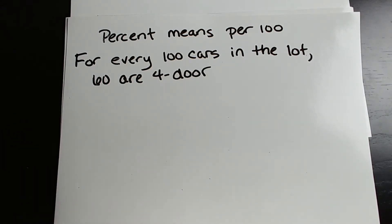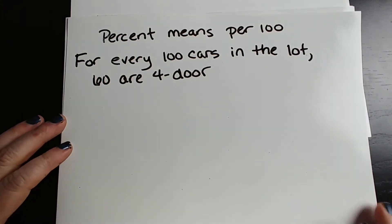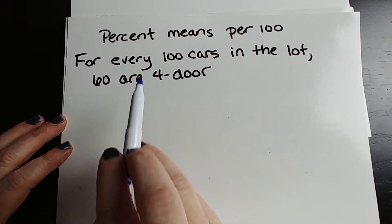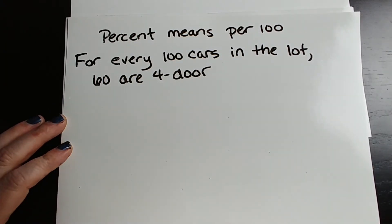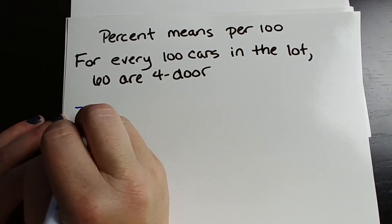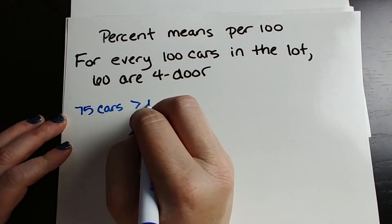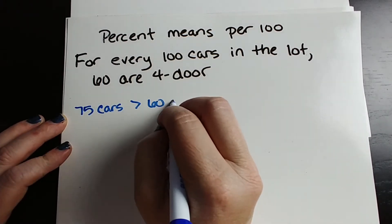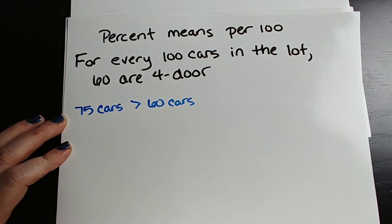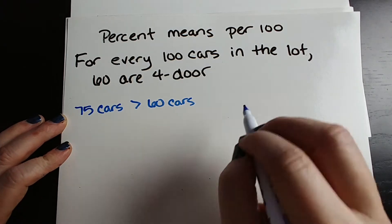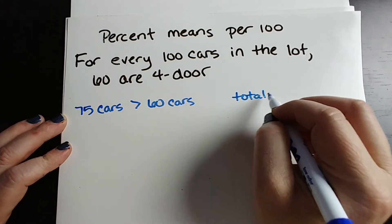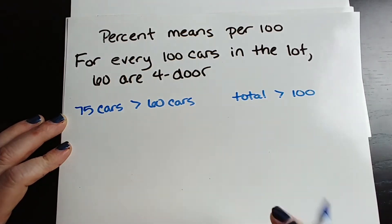We can already tell that there are going to be more than 100 cars in this parking lot. How do we know that? Because if for every 100 there are 60, and we have 75 cars — 75 cars is greater than 60 cars. Therefore the total will be greater than 100.